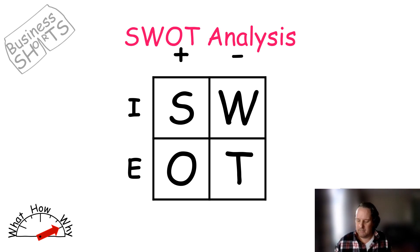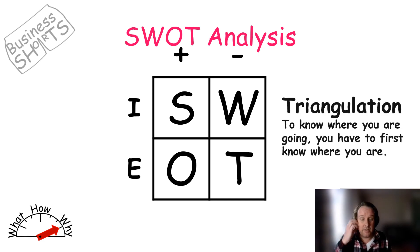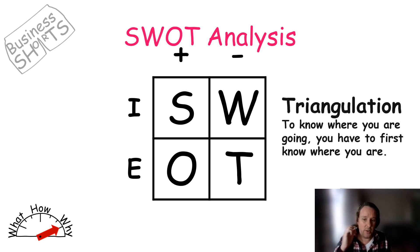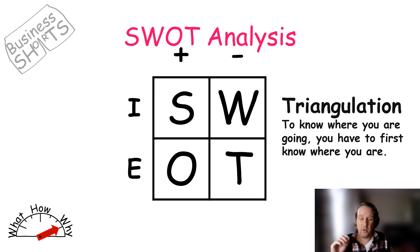Why do we do it? Simply: triangulation. You've got to know where you are to know where you're going. Doing a well-researched SWOT — covering both your internal and external factors — will help you know exactly where you are right now as a company, and where you need to be going.